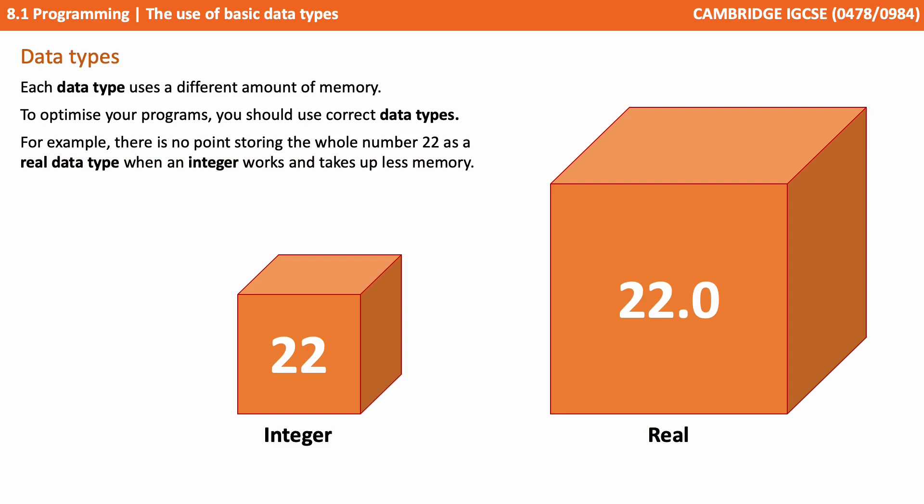Each data type uses a different amount of memory. To optimize your programs, the correct data type should be used. For example, there's little point in storing the whole number 22 as a real data type when the integer data type would be perfectly acceptable and take up less memory.